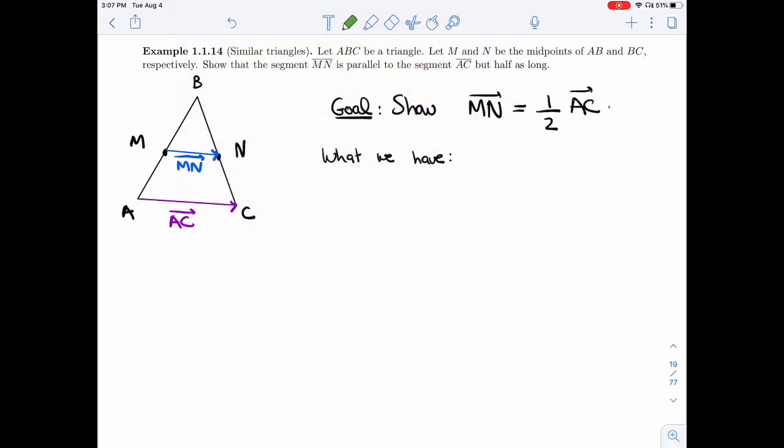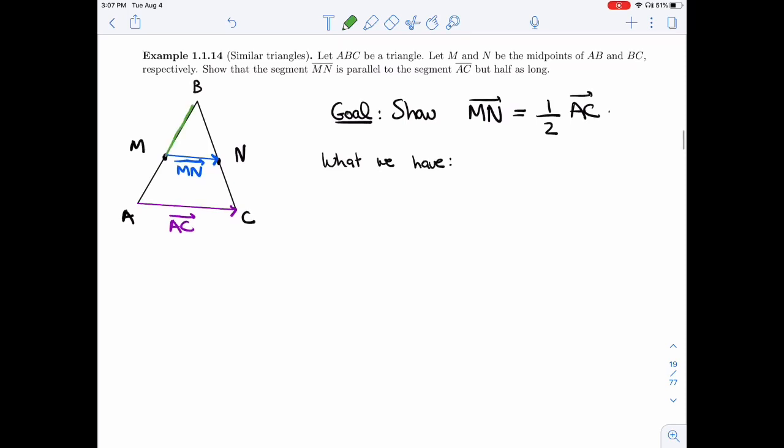So what do we know? The main thing we know is that M is halfway. So if I look at this vector MB, well, it's halfway, so it will be half of AB.